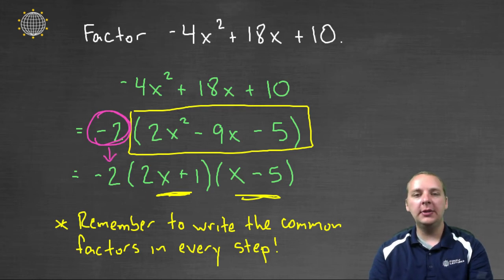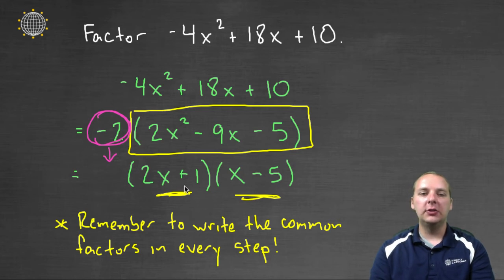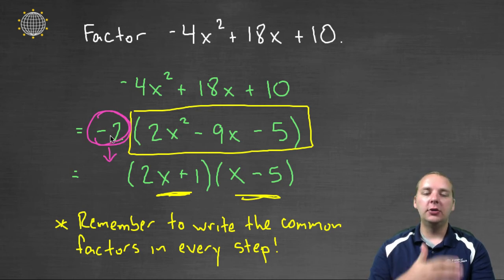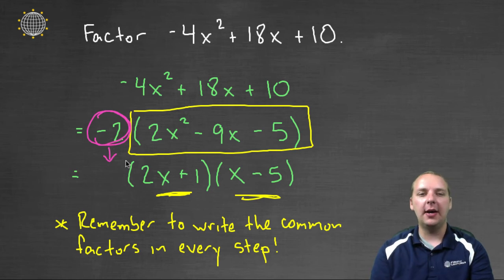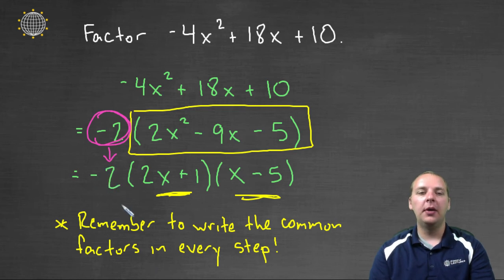They'll forget to carry this 2 down to the next step. And so I see so many students will have this as a final answer: just the (2x+1) times the (x-5). And that is the right factorization of the quadratic, but they'll just drop off the -2 because they weren't really using it in that step. So remember to carry this coefficient through in every single step, all the way through the remainder of the problem.